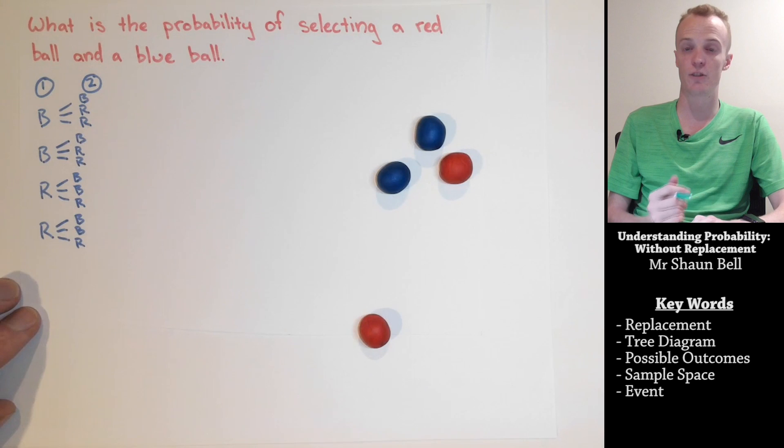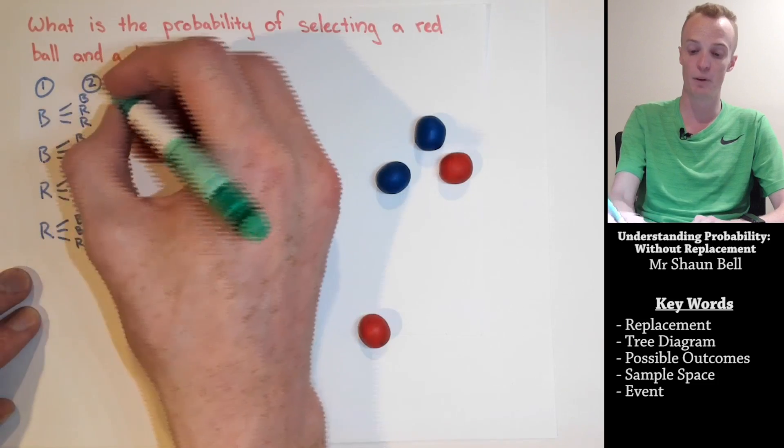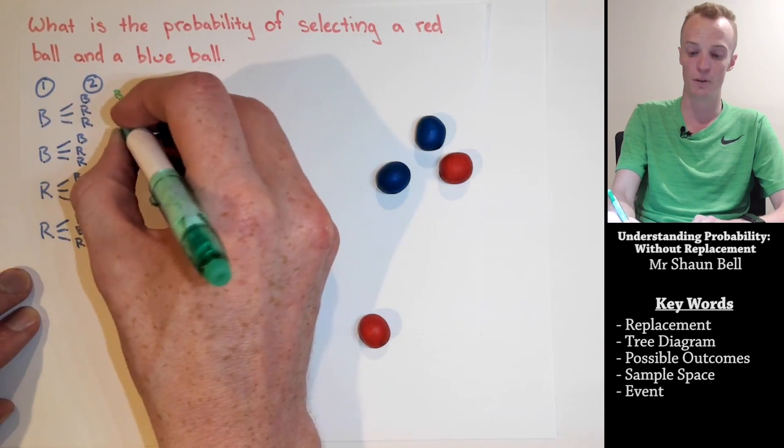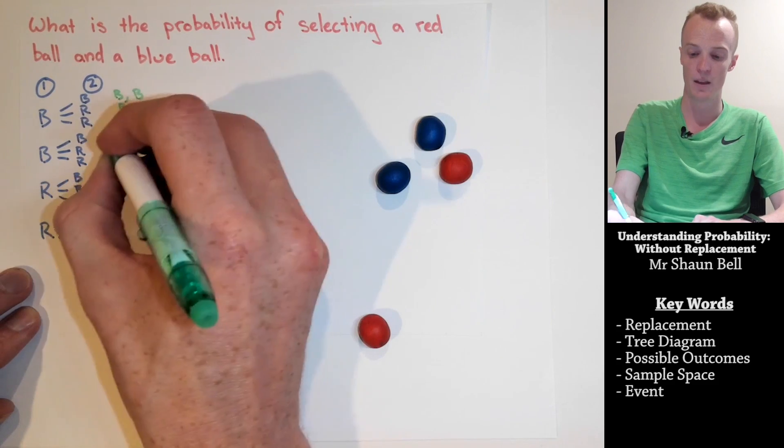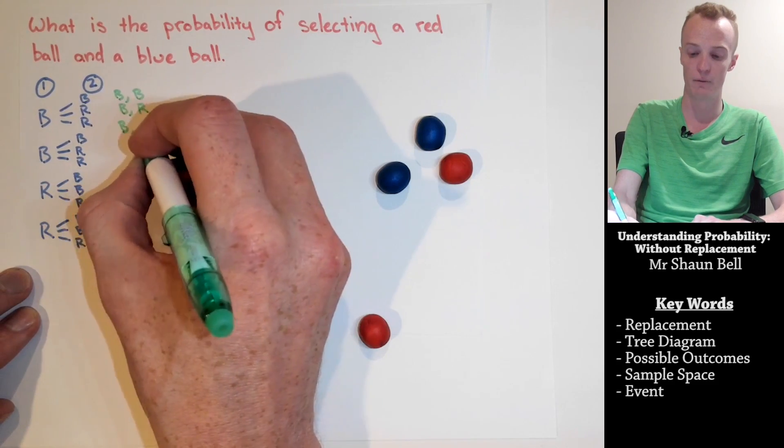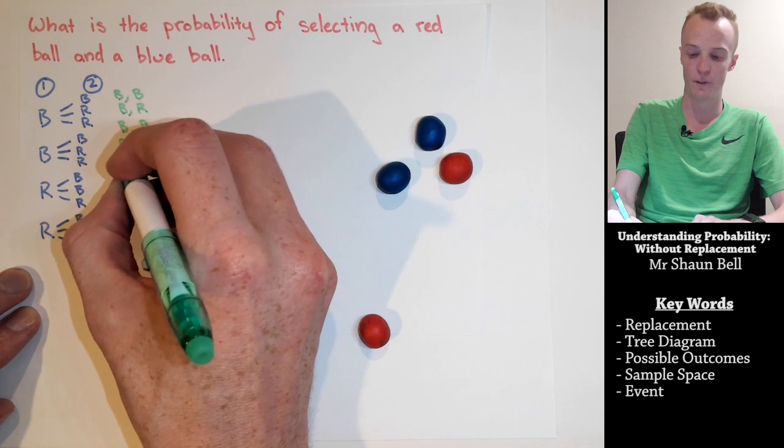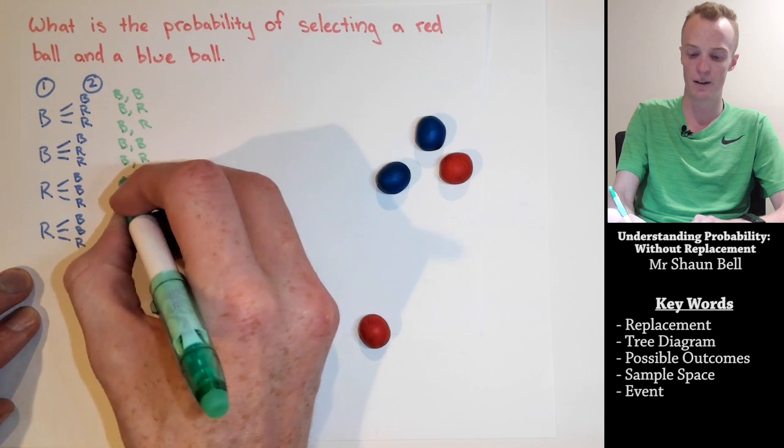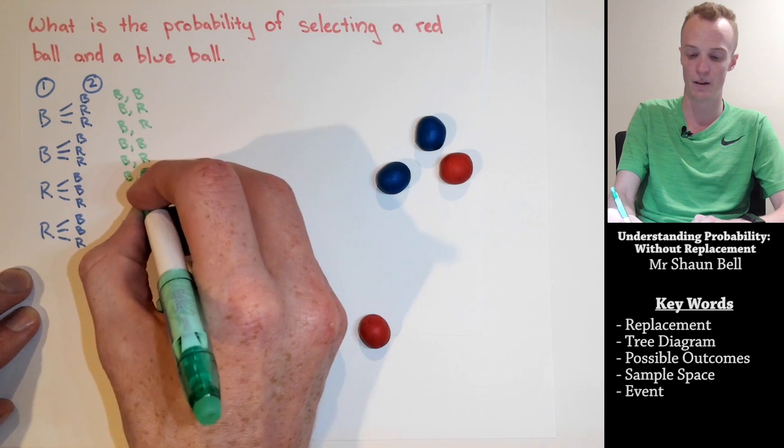Now, the purpose of drawing this tree diagram is so that we can list all the total possible outcomes that are available. So, we could get a blue followed by another blue ball. We could get a blue followed by a red, a blue followed by a red, blue followed by blue, blue followed by red, blue followed by red.